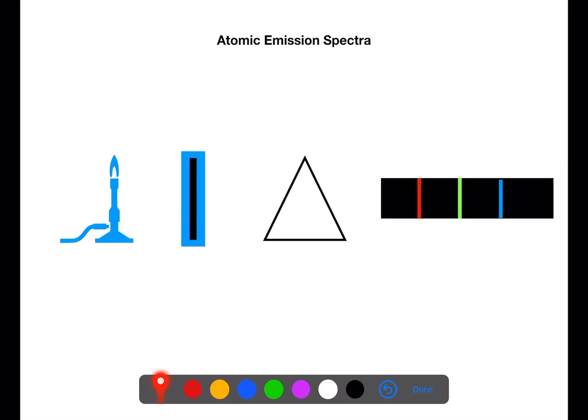In an atomic emission spectra a sample is heated in a flame. This excites the electrons from their ground state into an excited state. They then fall back to ground state and emit photons of light. These photons of light can be gathered through a slit and then passed through a prism.